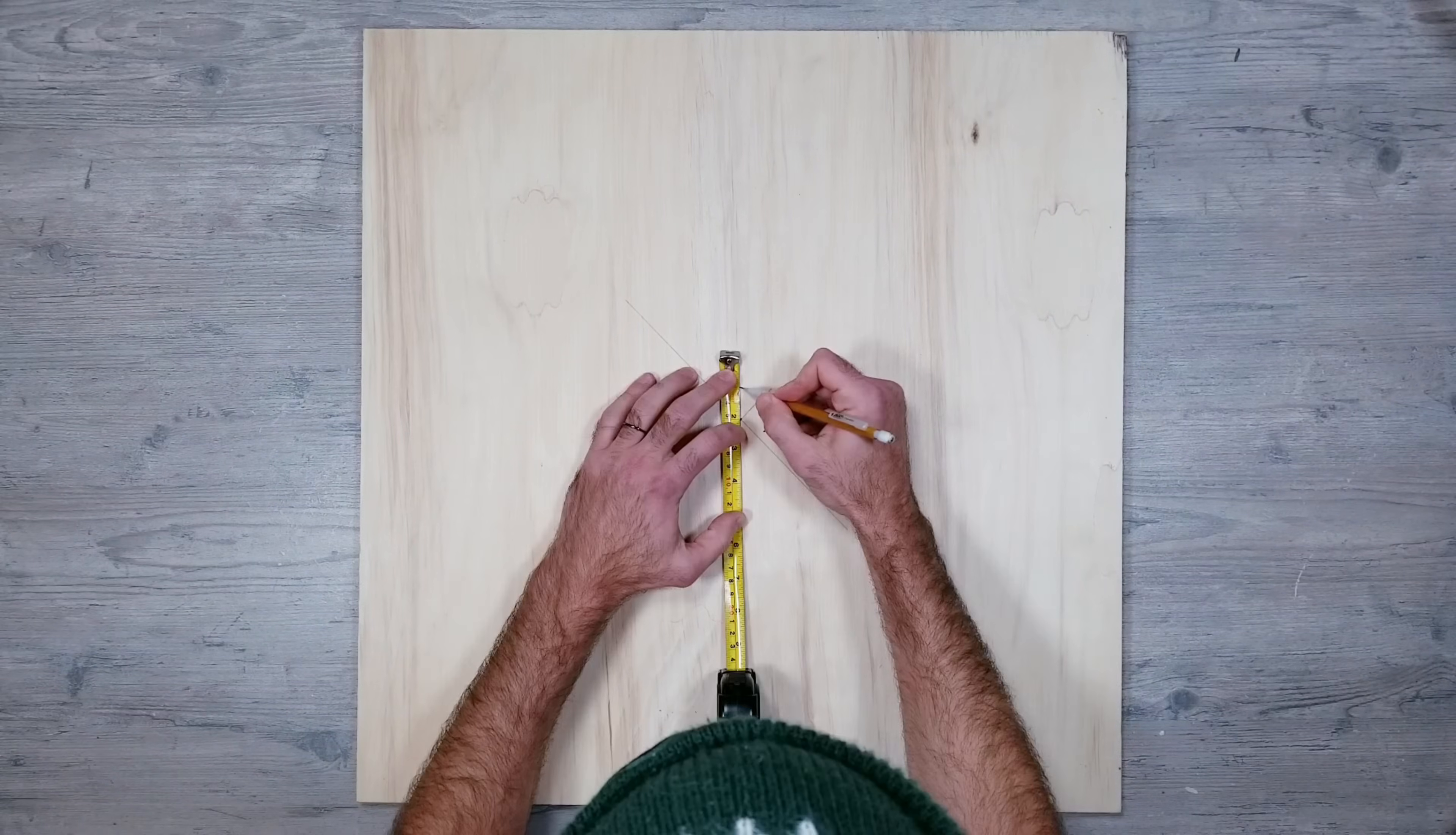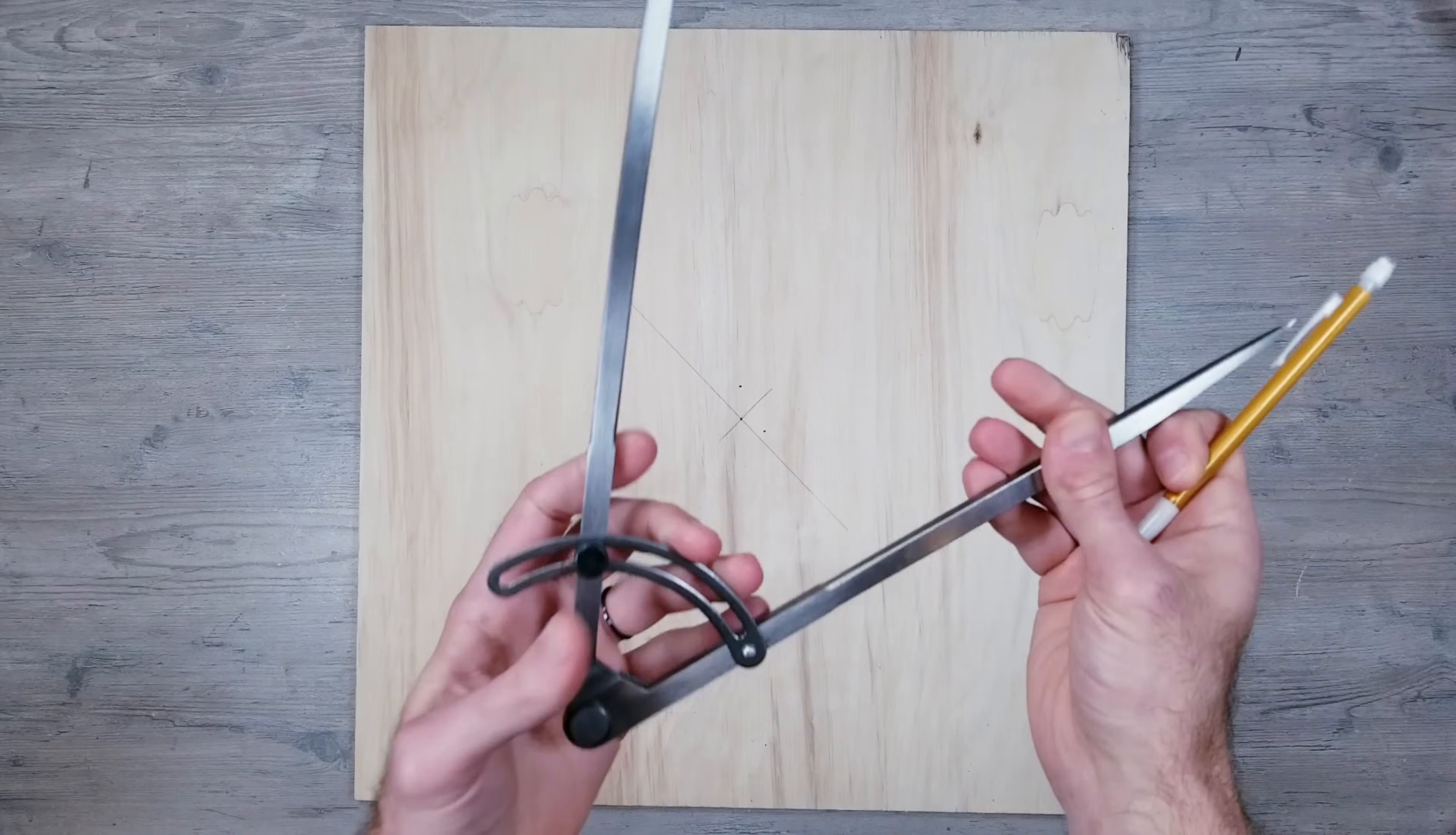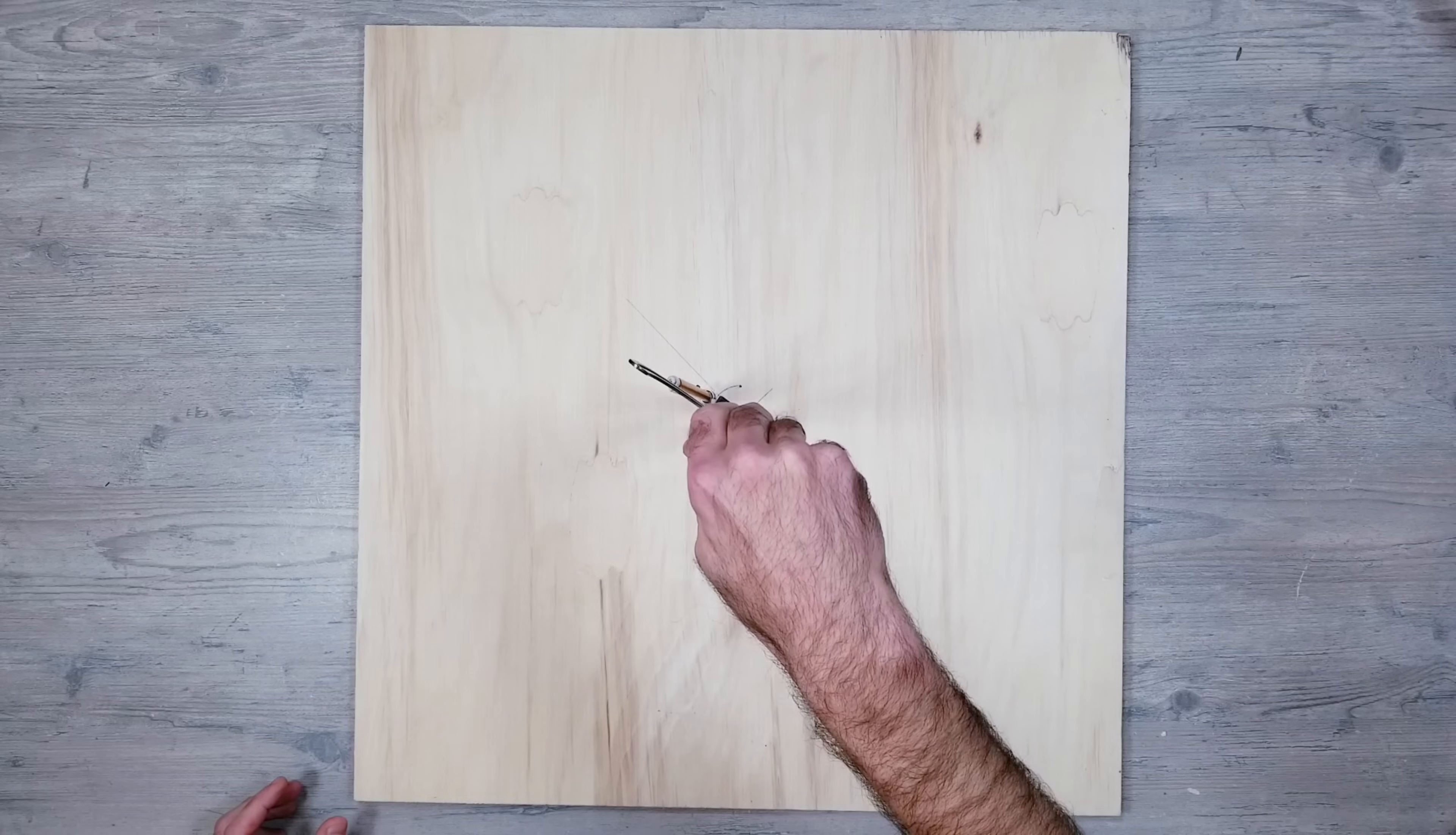Next, from the center point, I'll be making a mark one inch above. Moving on, I bought this large compass on Amazon and aligned the pivot point at the very center while the pencil end will go on the dot we made one inch above. Then do a half circle going left.